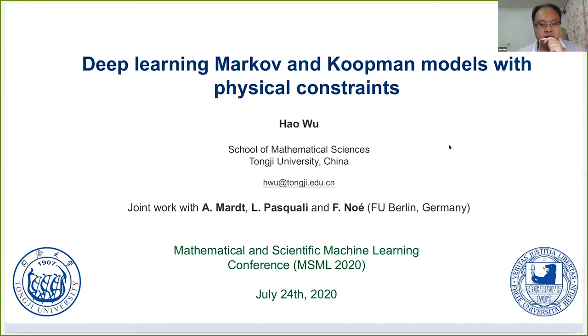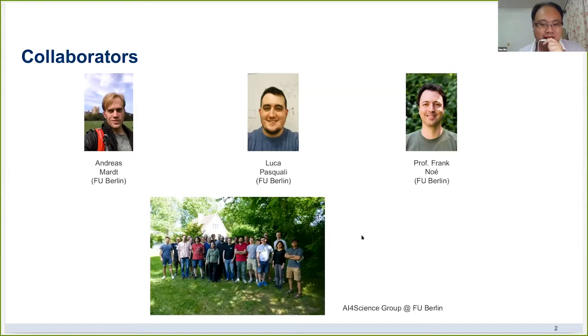And with that, let's move to our first speaker, who's Hao Wu from Tongji University, and he will present on deep learning Markov and Koopman models with physics constraints. Good morning, everyone. First of all, I would like to thank the organizers of MSL 2020, giving me such an opportunity to introduce our recent work on Markov models and the Koopman models. This is a joint work with Andreas Mardt and Luca Pasquali and Professor Frank Noé. They all come from the AI for Science group in Free University of Berlin, and I'm also the former member from that group.